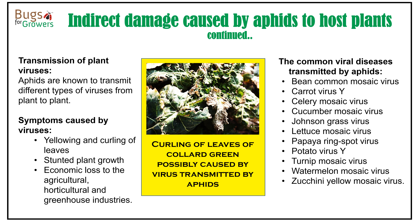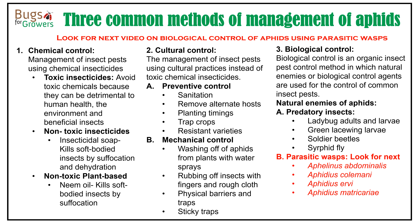For aphid management, growers generally use three different methods that include chemical insecticides, cultural practices, and biological control agents or natural enemies of insects. Growers generally use toxic chemical insecticides when there is heavy infestation of aphids. However, these toxic chemicals should be avoided because of their detrimental effects on human health and the environment. These chemical pesticides can also kill natural enemies of insects and beneficial insects like honeybees. Therefore, it is recommended to use non-toxic chemicals like insecticidal soap and neem oil, which can kill aphids by suffocation and dehydration.